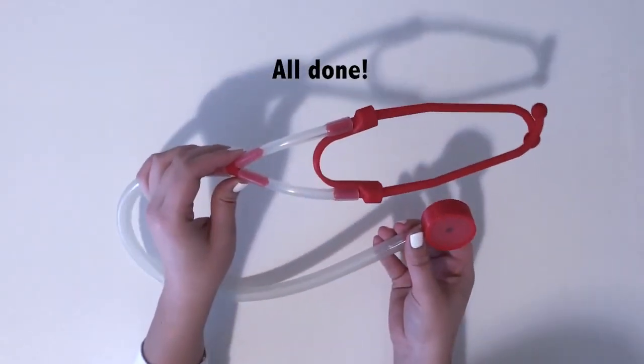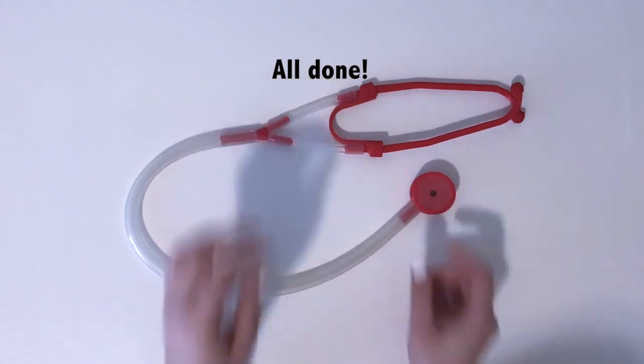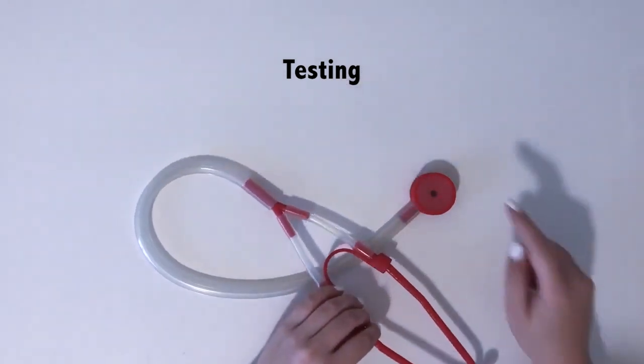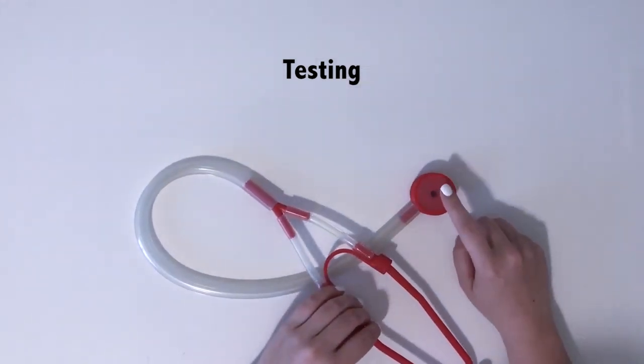And you're done! Once your stethoscope is assembled, try it out by placing the headset into your ears and gently tapping on the diaphragm. It should sound loud and clear. You can also test it out by listening to heart or breath sounds.